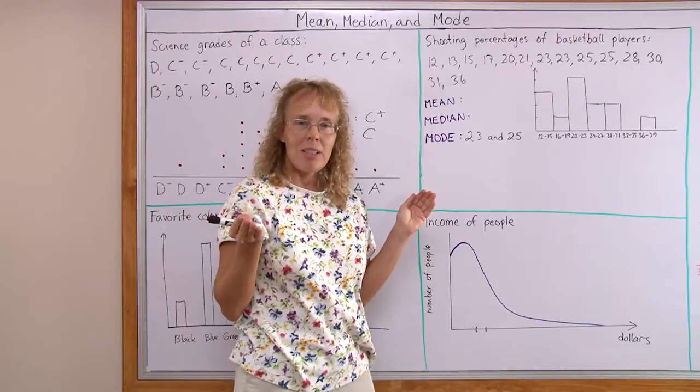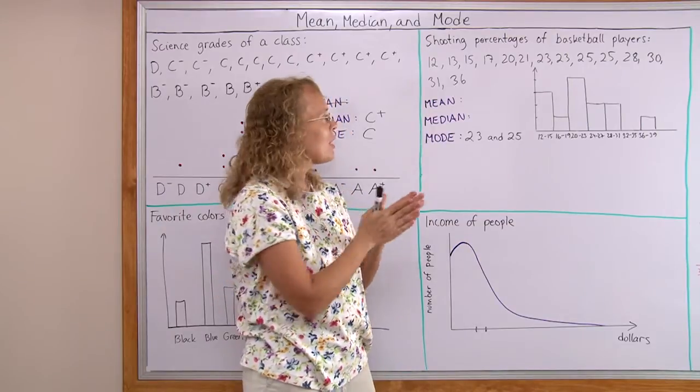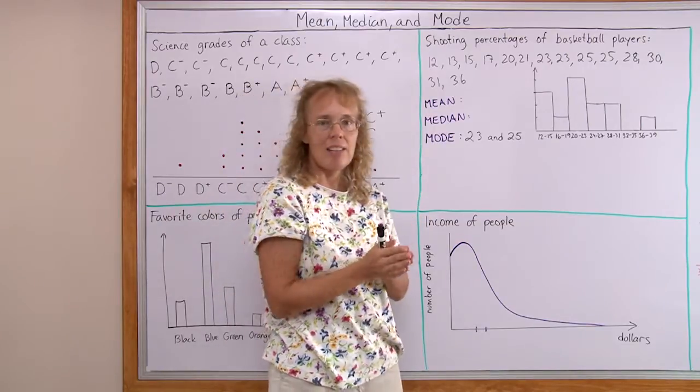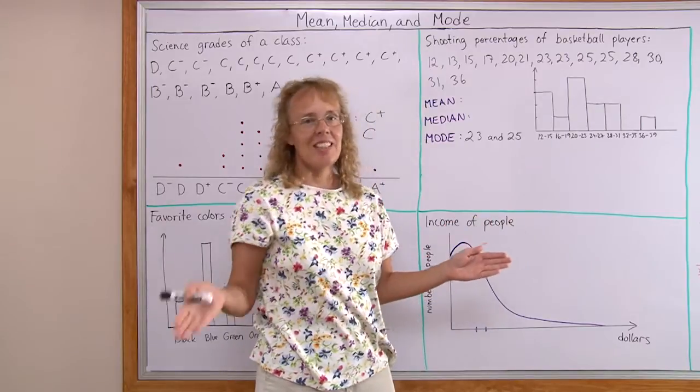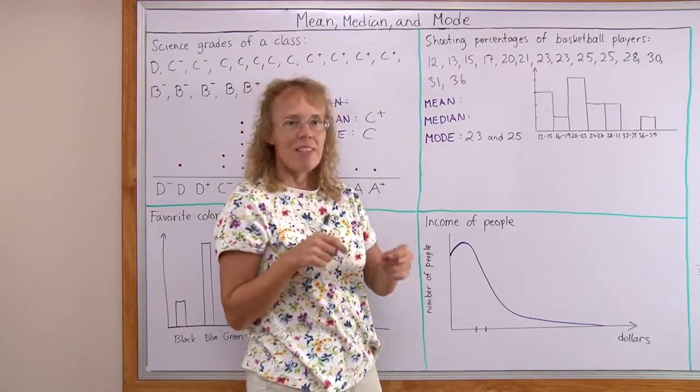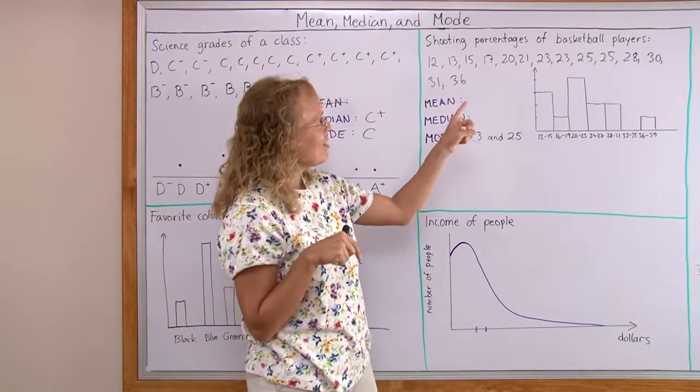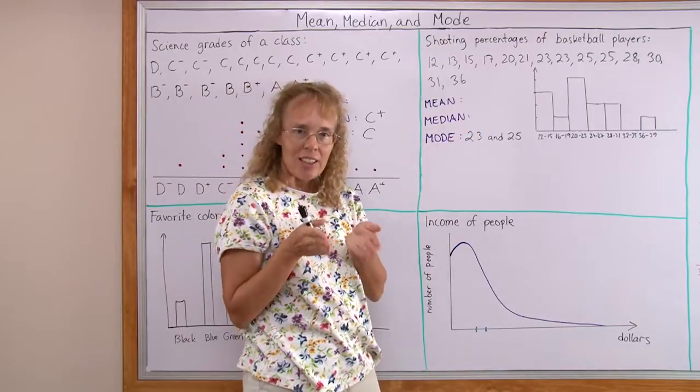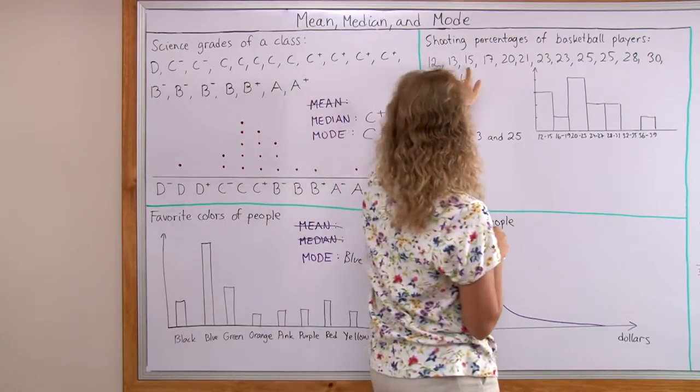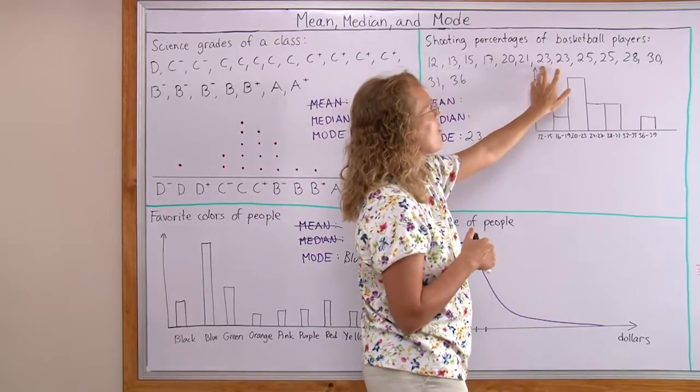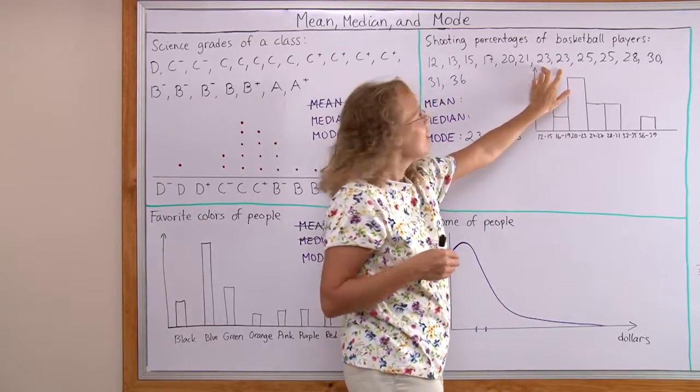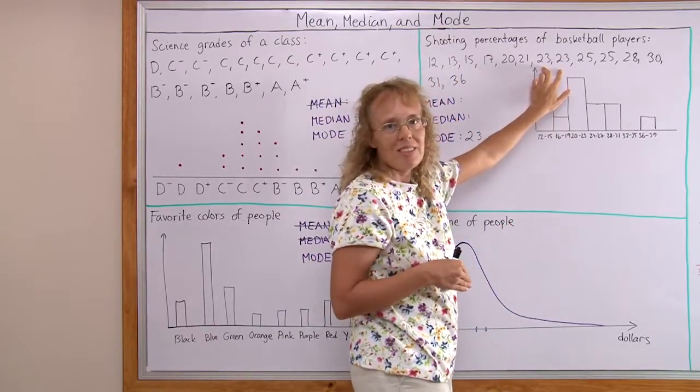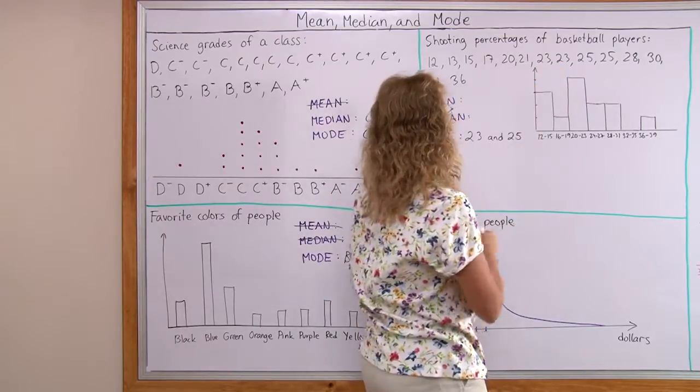So I will look at the 7th and 8th value there and take their average. It's the 7th and it's the 8th value. If you take basically their midpoint or their average, it is going to be 23. Median is 23.